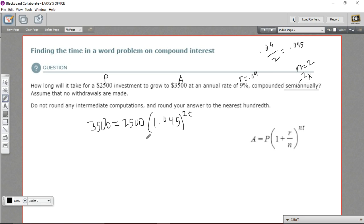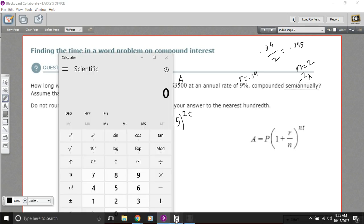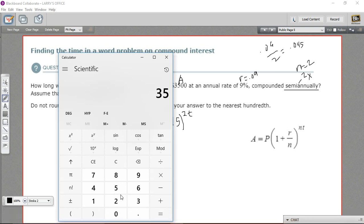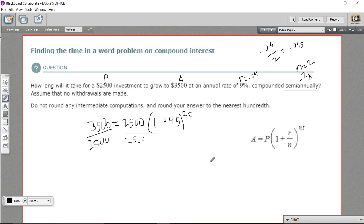I think the first thing I'm going to do is get the exponential part of this alone. I'm going to divide both sides by 2500. So let's see, what's 3500 divided by 2500? All right, 1.4, that's simple. So we get 1.4 over here, and here that cancels of course, so we get 1.045 to the 2t power.